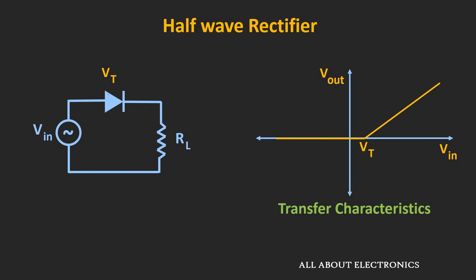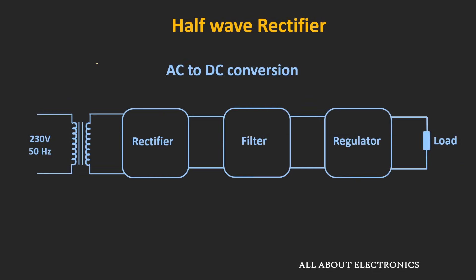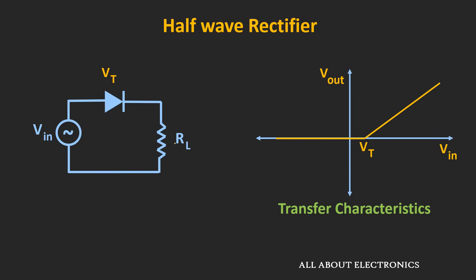As you can see, the diode will start conducting only when the applied input signal is more than the threshold voltage. This voltage drop across the diode will not be a much problem for AC to DC conversion, because the applied input signal is much larger than the threshold voltage drop. But whenever this rectifier circuit is used for small signal conditioning and signal processing, it will not work. If the input applied is smaller than the diode voltage drop, the rectifier circuit will not be able to rectify the signal.